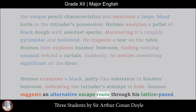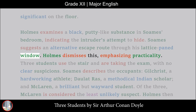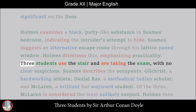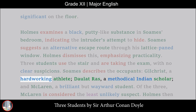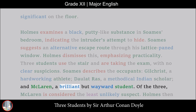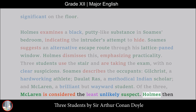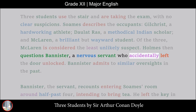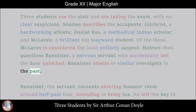Soames suggests an alternative escape route through his lattice-paned window, but Holmes dismisses this, emphasizing practicality. Three students use the stair and are taking the exam, with no clear suspicions. Soames describes the occupants: Gilchrist, a hard-working athlete; Dalak Raz, a methodical Indian scholar; and McLaren, a brilliant but wayward student. Of the three, McLaren is considered the least unlikely suspect. Holmes then questions Bannister, a nervous servant who accidentally left the door unlocked, and Bannister admits to similar oversights in the past.